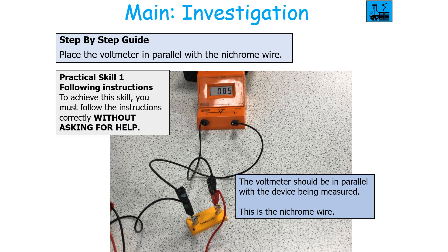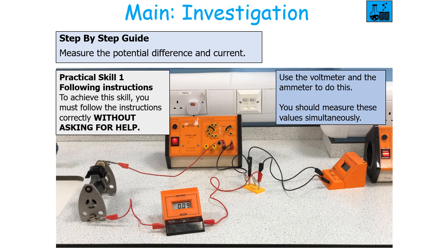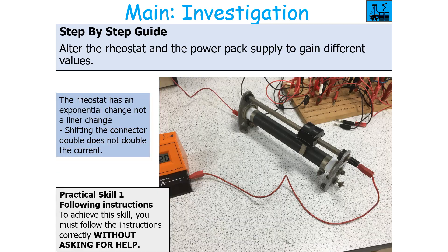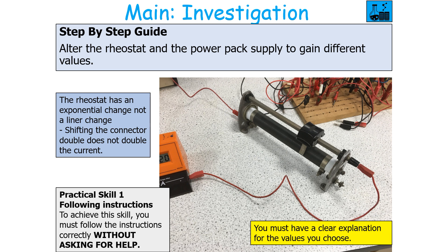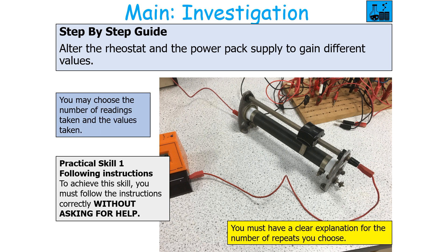Place a voltmeter in parallel with the nichrome wire — the voltmeter is always placed in parallel with the device being measured. Measure the potential difference and current using the ammeter and voltmeter simultaneously. Always remember to turn off the power pack between readings so the temperature of the wire does not get too hot. Alter the rheostat and power supply to gain different values. Note that the rheostat has an exponential change, not a linear one, so shifting the connector to double does not double the current. You must never get a value of current above 1.3 amps for safety reasons. Choose the number and values of readings taken and have a clear explanation for the number of repeats.